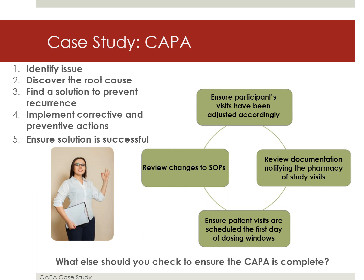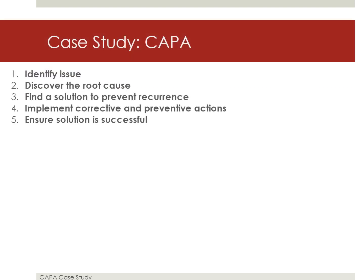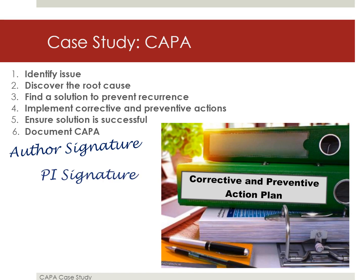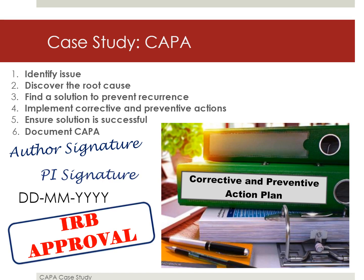What else should you check to ensure that CAPA is complete? You should also verify that the corrective and preventive action plan is properly documented, signed by the author (who may be a CRC), signed by the investigator, dated, submitted to the IRB for review and approval, and kept in the regulatory binder.